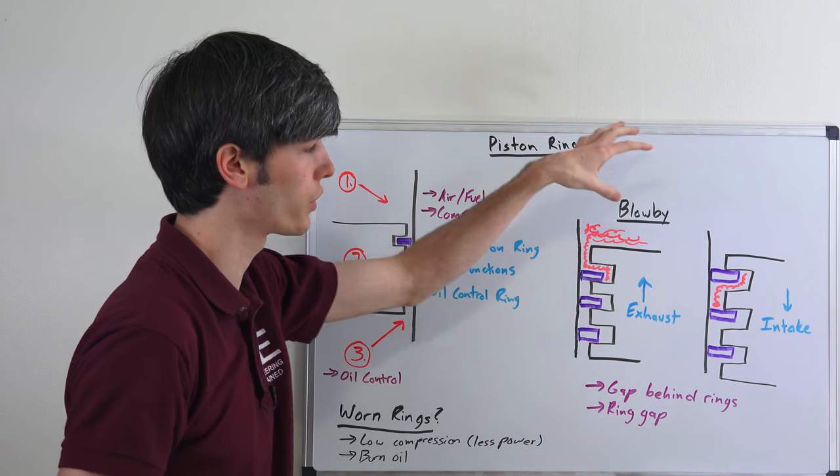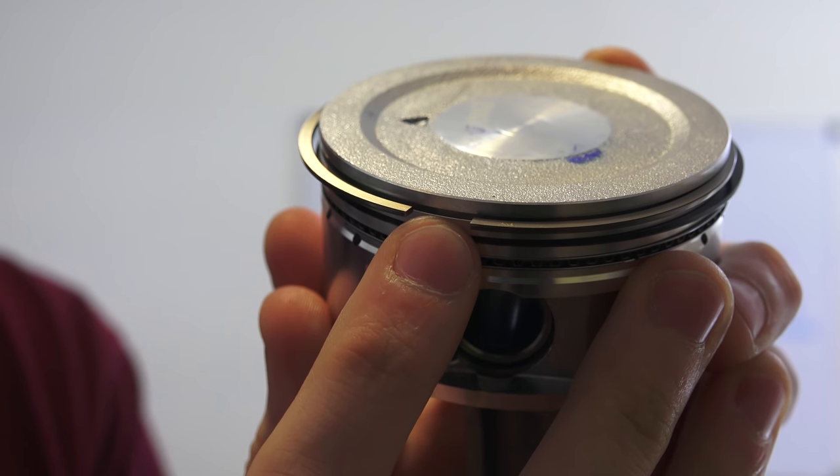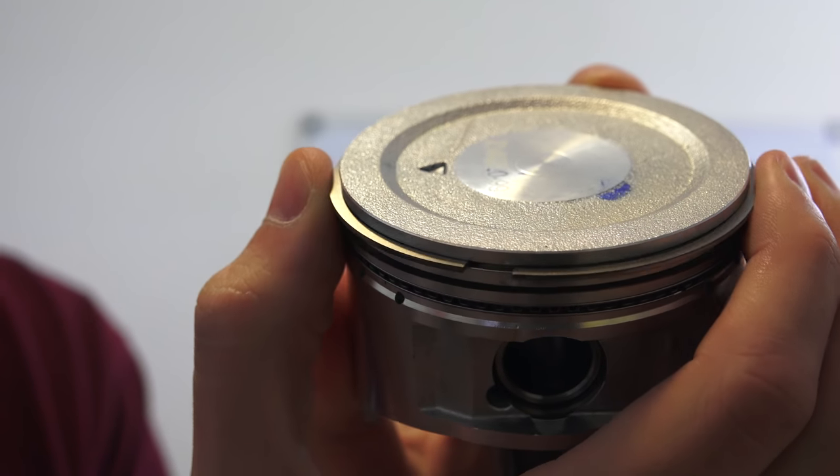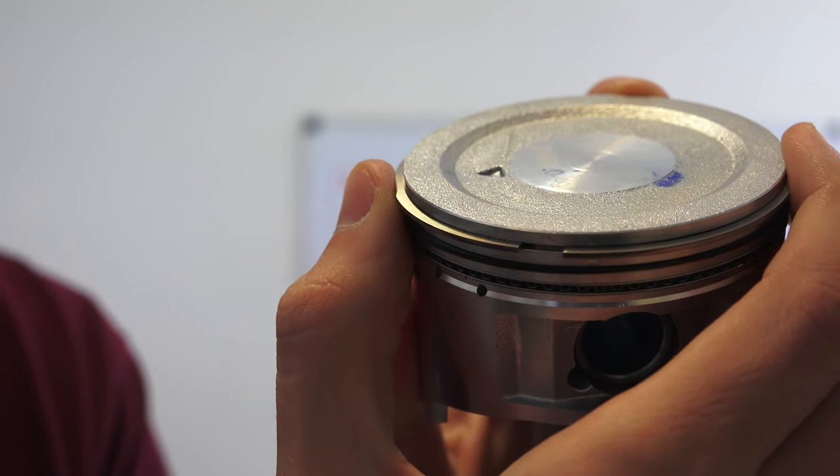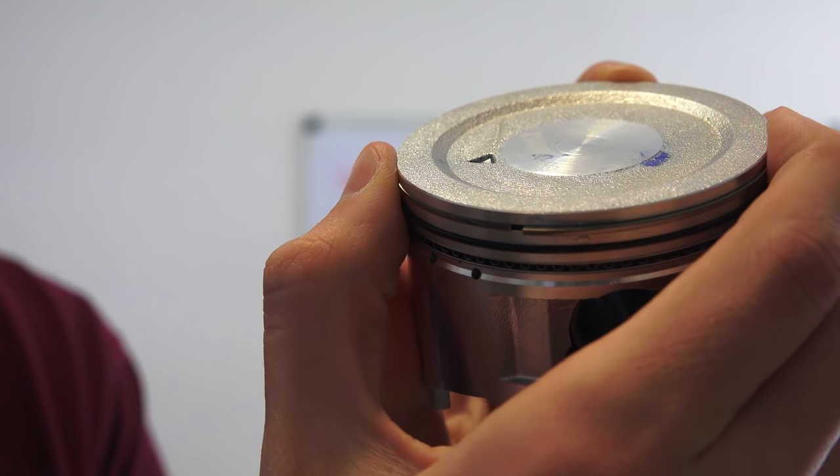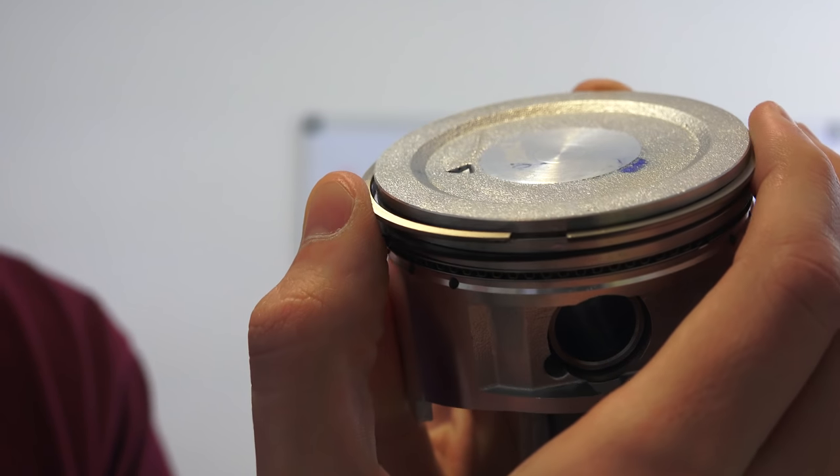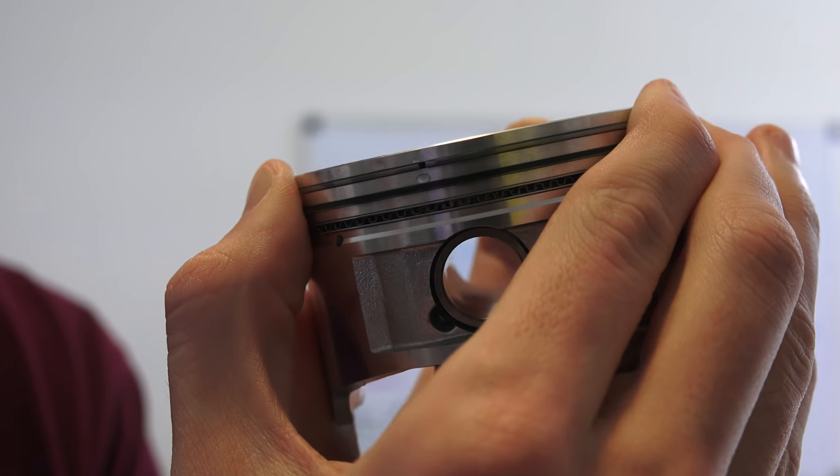Another way that you can have blow-by occur is passing through these piston ring gaps. You can see that looks like a fairly large gap, but that's not actually how large it will be once it gets compressed within the cylinder. As you squeeze this piston down into the cylinder, that gap is actually going to be quite a bit smaller. It's going to be very small as far as the gap there.